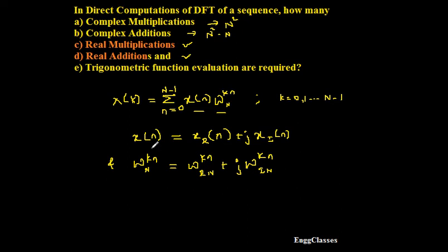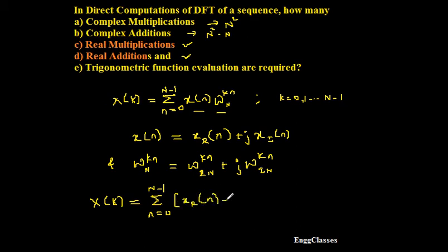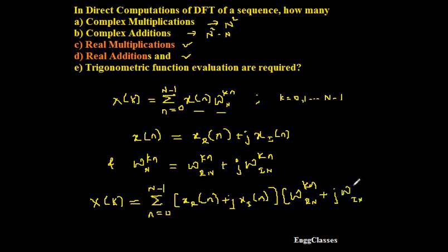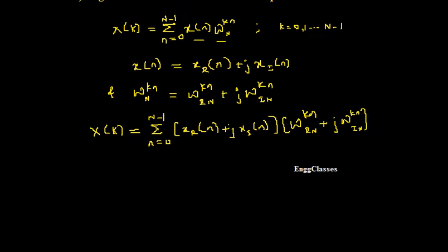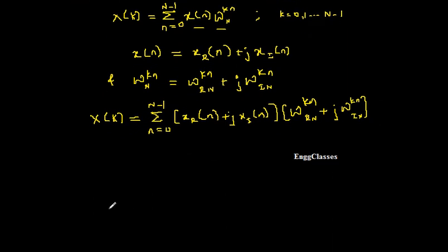So now we have expressed the input and twiddle factor both in terms of their real and imaginary parts. The next step is to substitute these into the expression for X[k]. Therefore, X[k] equals summation n equals 0 to N minus 1, and in place of x[n] I substitute x_r[n] plus j·x_i[n], which gets multiplied with W_N to the power kn, which equals W_rN to the power kn plus j times W_iN to the power kn. Next step is I need to simplify it further by multiplying the terms together.